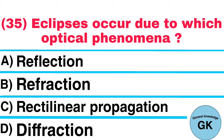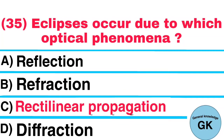Question number 35. Eclipses occur due to which optical phenomena? A. Reflection, B. Refraction, C. Rectilinear propagation, D. Diffraction. Answer: Rectilinear propagation.